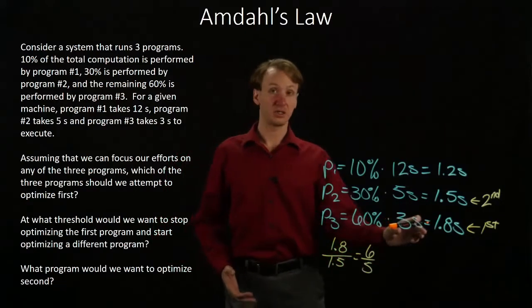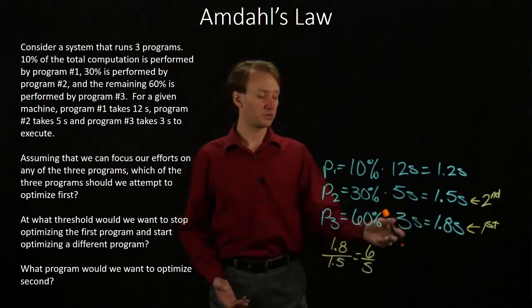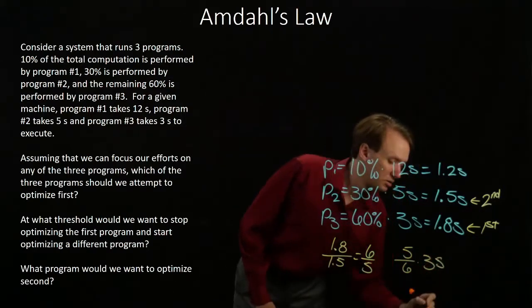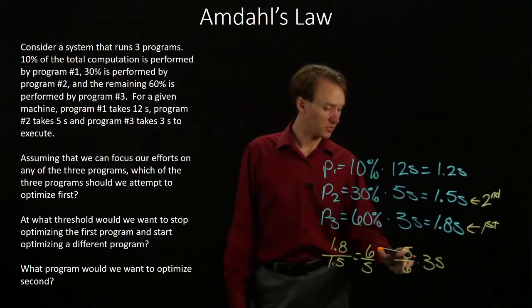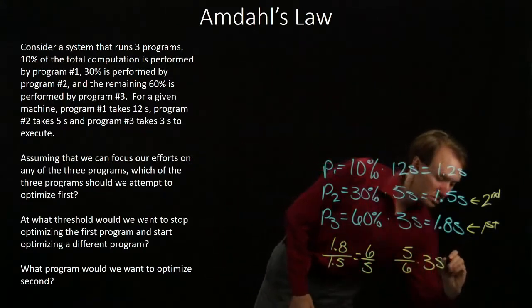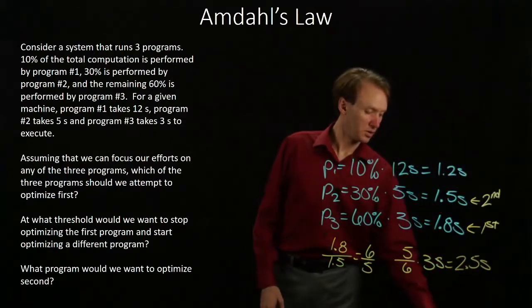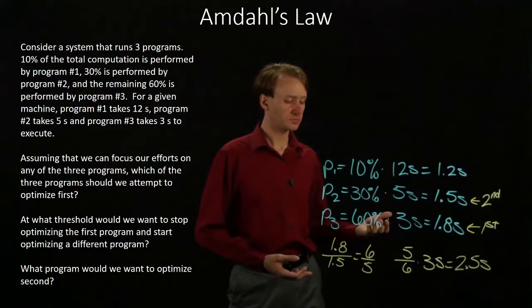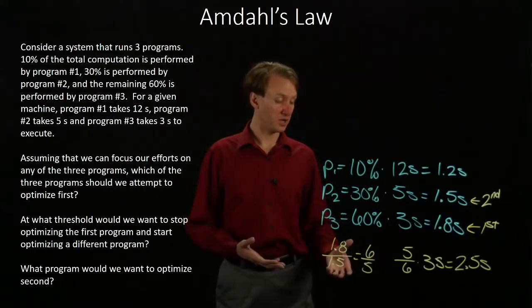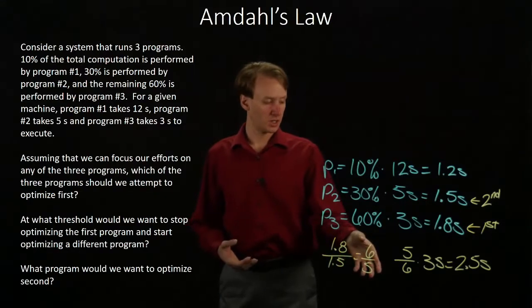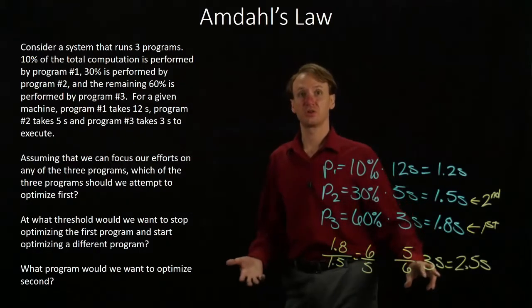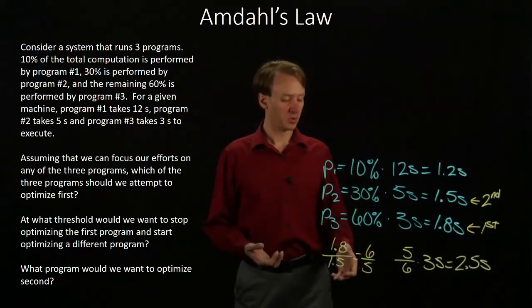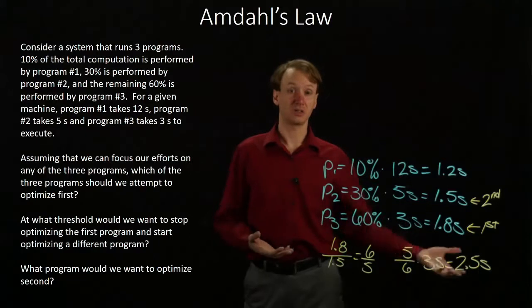If I want to know what that tells me about the execution time for Program 3, I need to apply this speedup to the 3 seconds. So I'd have 5 sixths times 3 seconds. The 3 in the numerator and 3 in the denominator cancel, and that tells me that once Program 3 takes less than 2.5 seconds to run, I'd be interested in switching to Program 2. Remember that 6 fifths is the speedup — this is how much I'm improving Program 3 — and that turns into 5 sixths when I actually want to apply it as an execution time. If I just applied 6 over 5 to my 3 seconds, I would get a larger number, whereas I'm expecting to improve performance, so I want a smaller execution time.